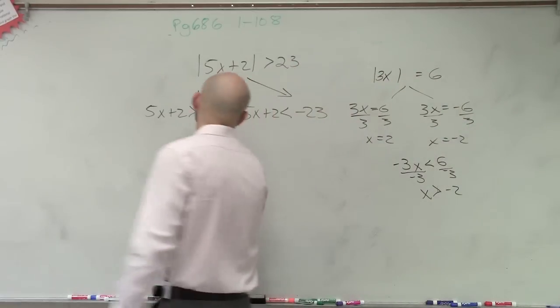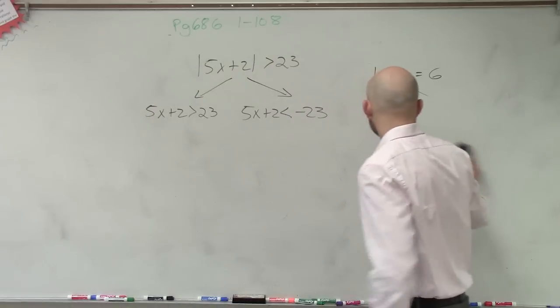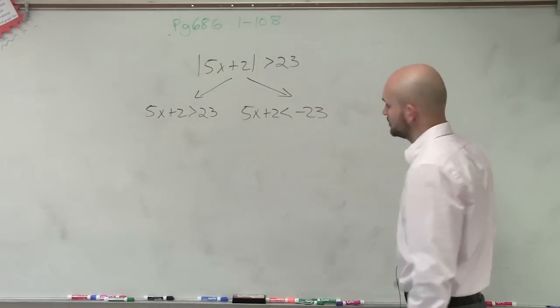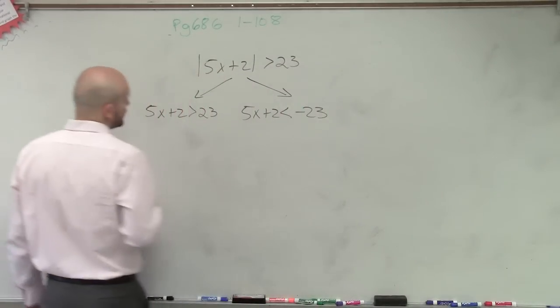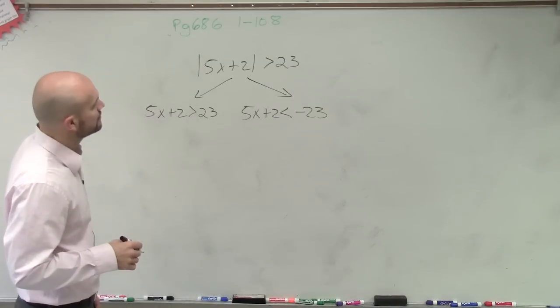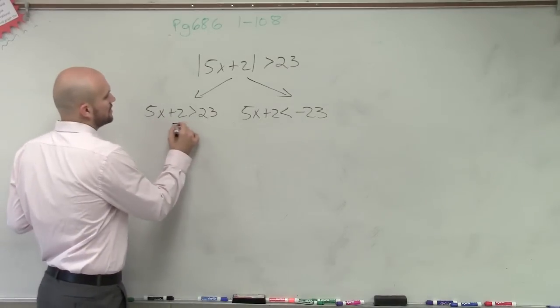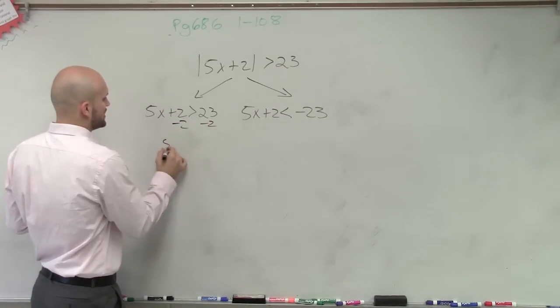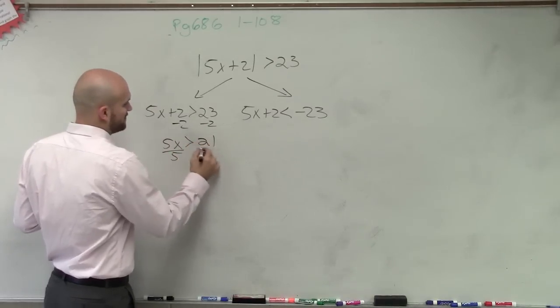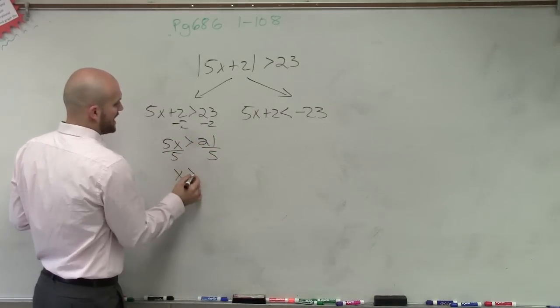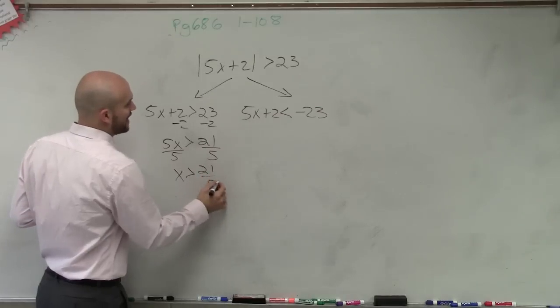So therefore, those are going to be my two circumstances now that I'm going to solve for. So now we just use our techniques of solving. So I'll subtract 2, subtract 2. So I get 5x is greater than 21, divide by 5, divide by 5. x has to be greater than 21 over 5.